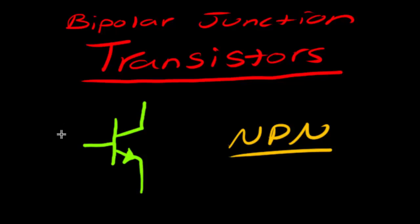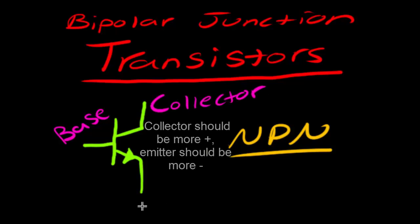Now this type of transistor has three connections. The one on the left is called the base connection. The top one is called the collector. And the bottom connection is going to be called the emitter here.